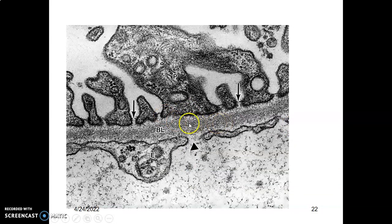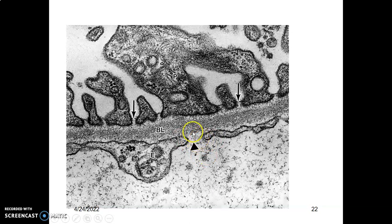Again under an electron microscope, you can see the podocytes lying on the basal lamina and the capillary endothelial cells lying on the basal lamina. Together, the fused basal laminae form the basement membrane. You can appreciate the fenestrations that lack diaphragms — the fenestrations of the glomerular capillaries.